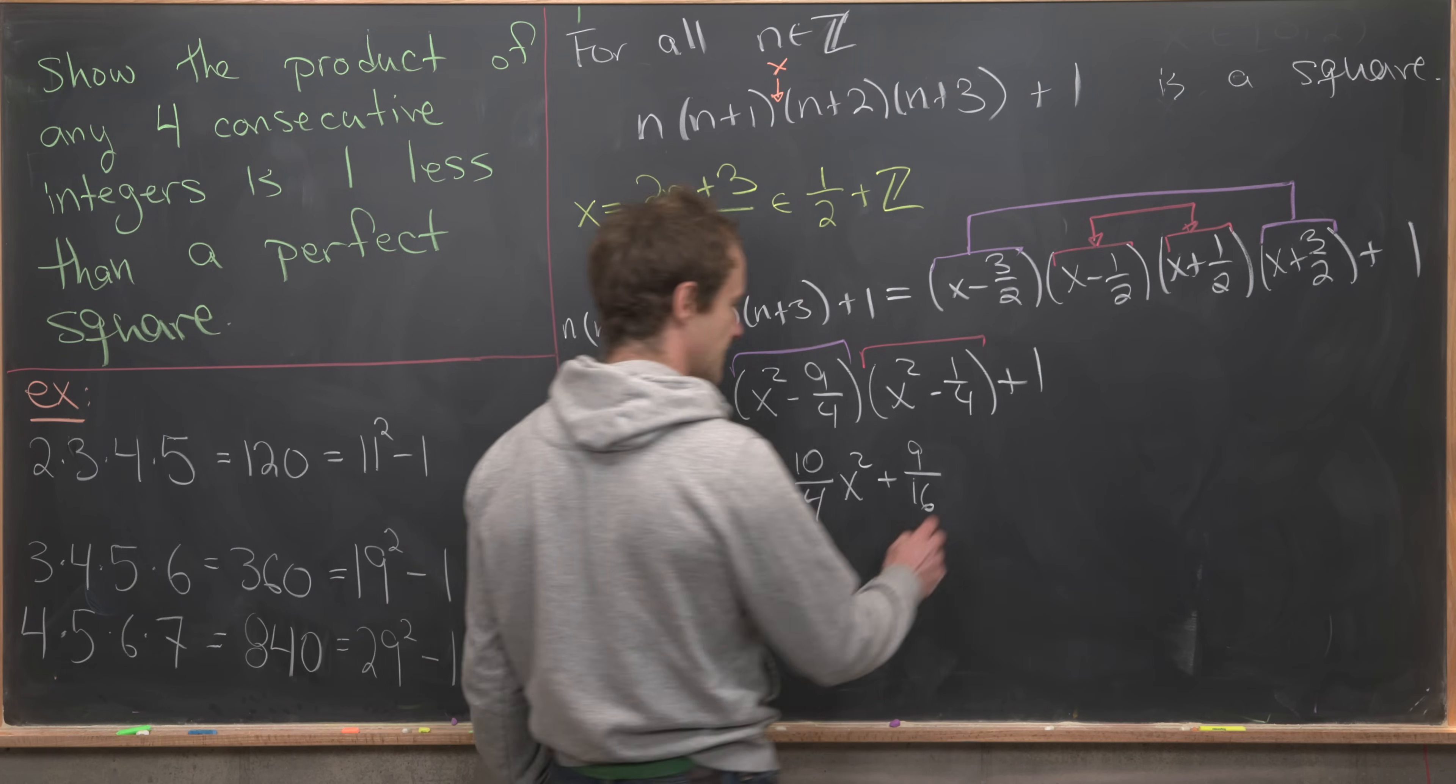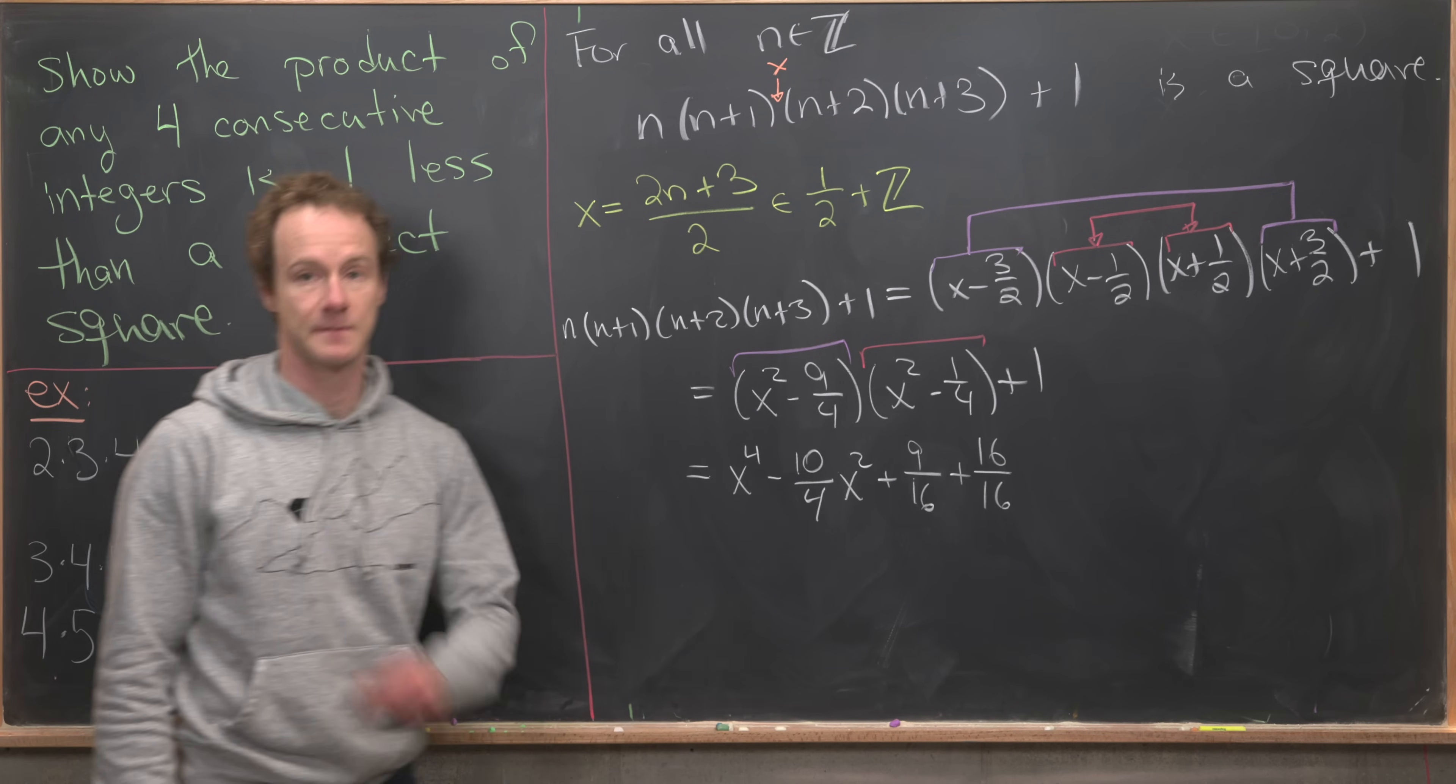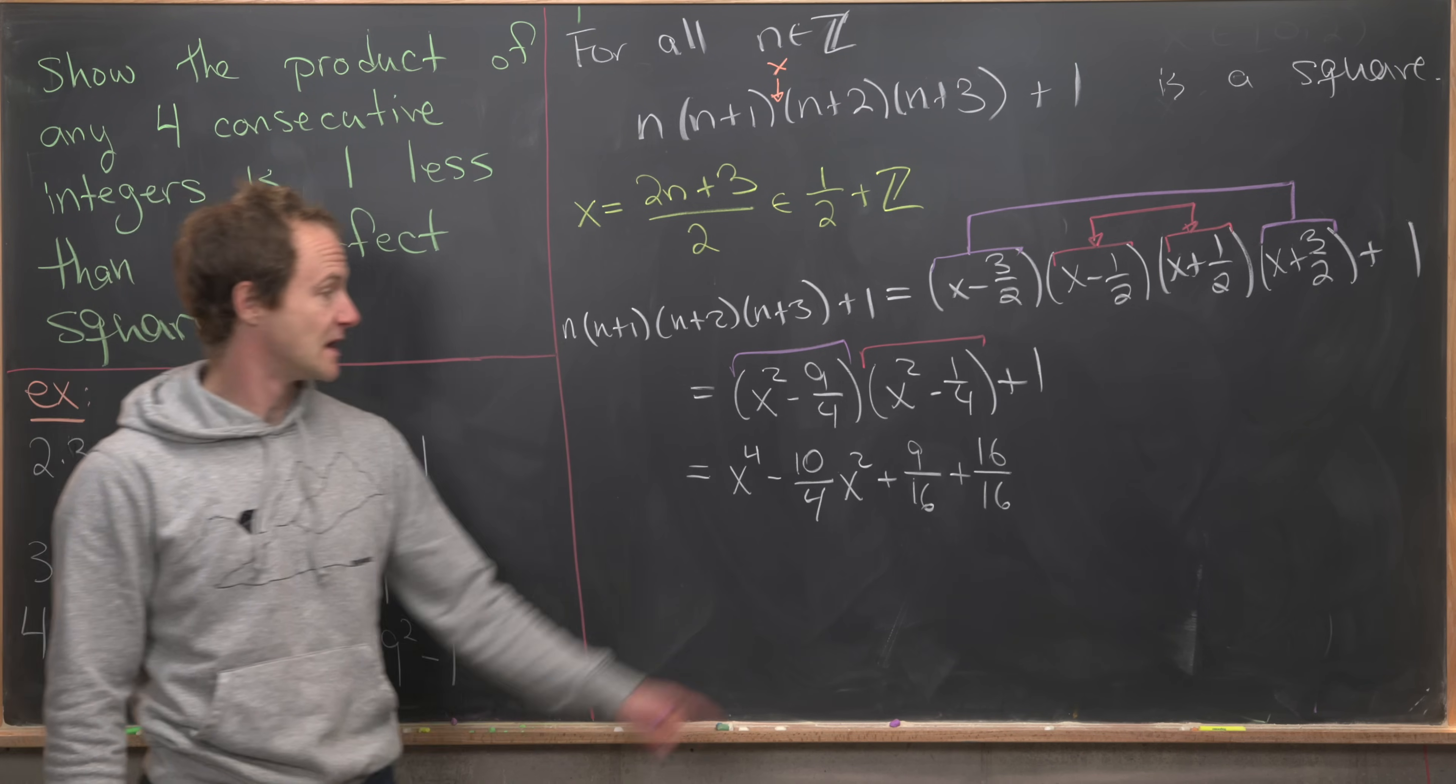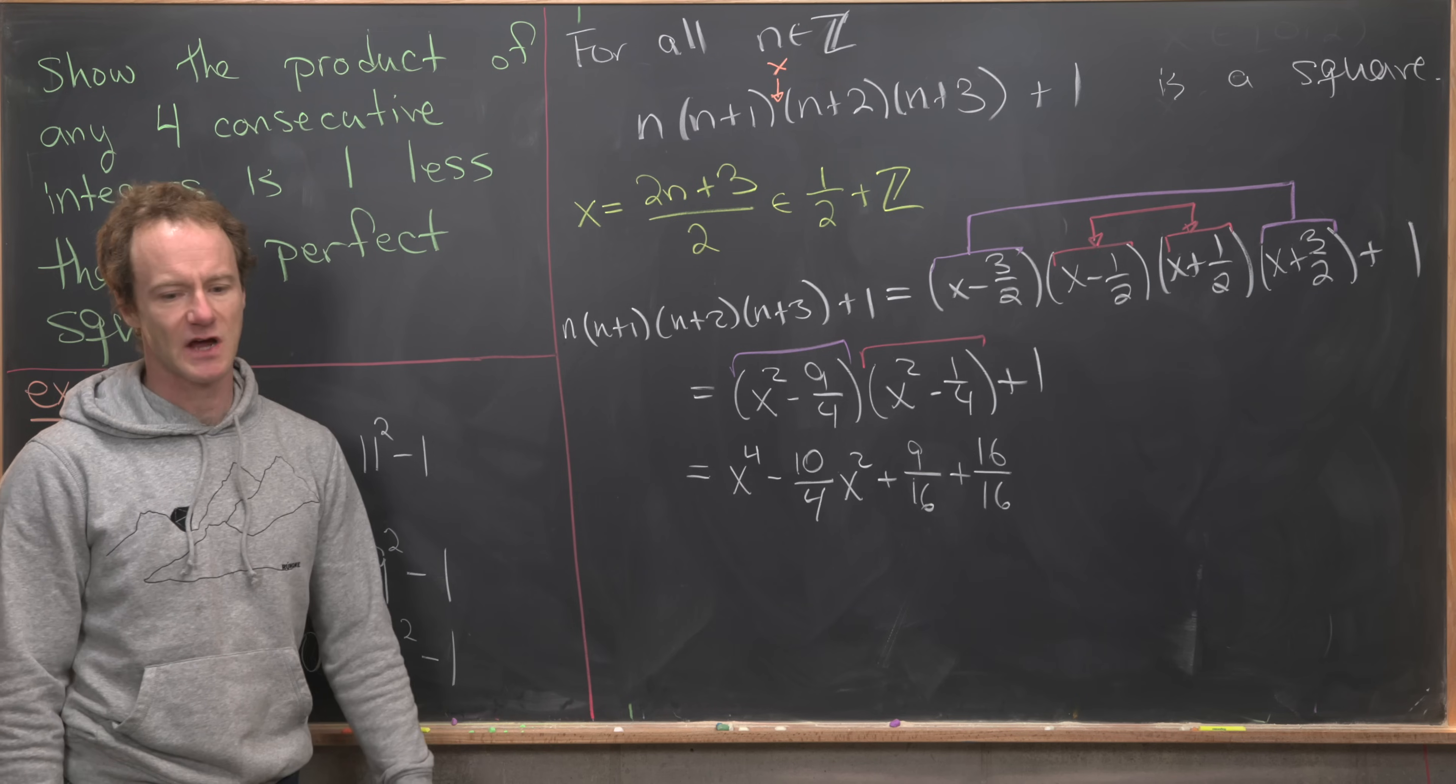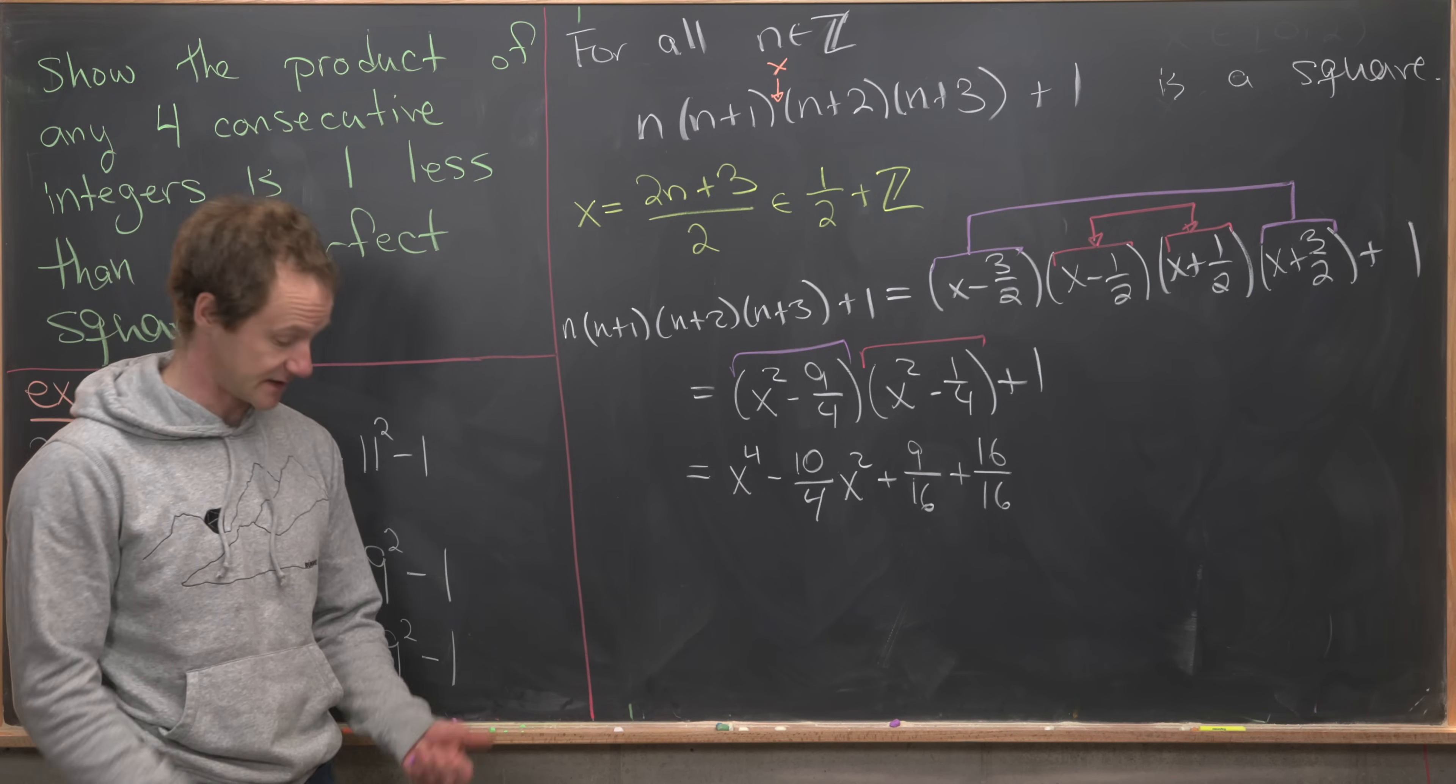And then finally, we've got plus one, but I'm going to write that as plus 16/16. And this is where it actually all works, and it's because 9 plus 16 is a perfect square. So all of this is kind of built off of the fact that 3, 4, 5 right triangles exist. So that's actually pretty nice.